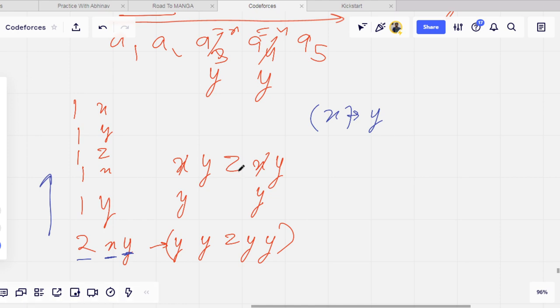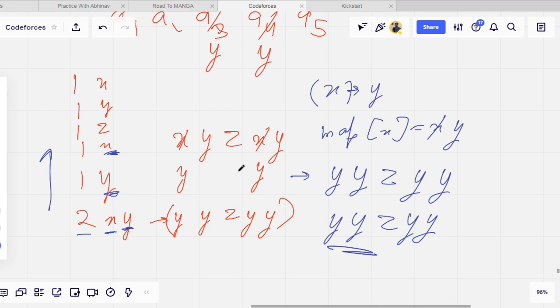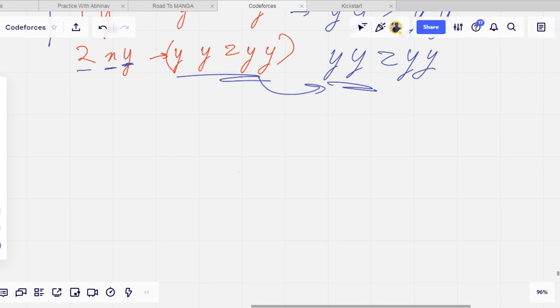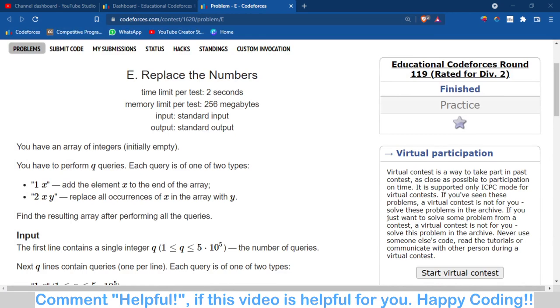The optimized approach uses a map. The idea is to maintain a mapping where the key is X and the value is Y, meaning X should be replaced with Y. When we get a query to replace X with Y, we store this in our map. The important part is handling chains of replacements - if X maps to Y and later Y maps to Z, we need to track that X ultimately maps to Z.